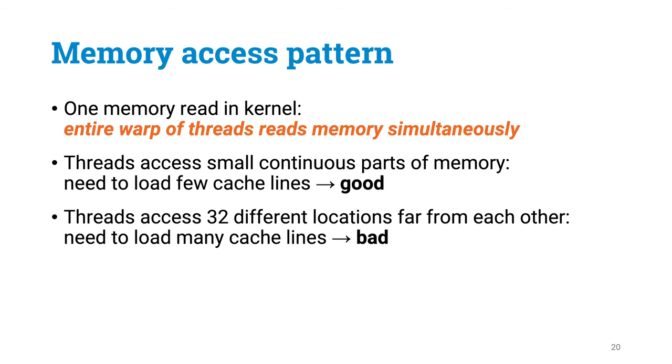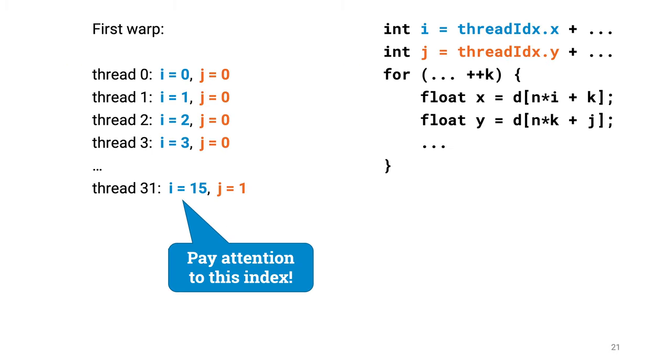So to summarize, one memory read in the kernel means 32 memory reads simultaneously. If your threads access a small continuous part of memory, everything will fit in a small number of cache lines, and things are good. If you read 32 different locations far from each other, you will likely need to read 32 cache lines, which is bad. So how are we doing from this perspective in our program?